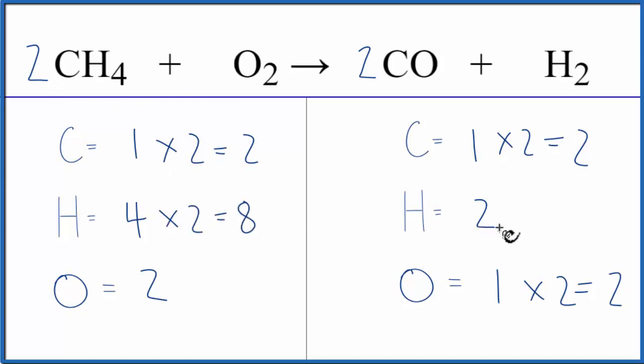So you can see we waited to balance the hydrogen because now all we have to do is put a four in front of the H2. Two times four. That'll give us eight. And now we've balanced the equation.